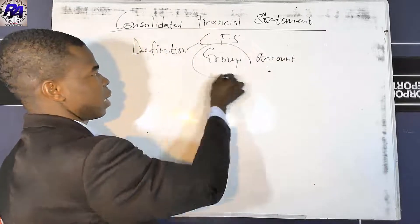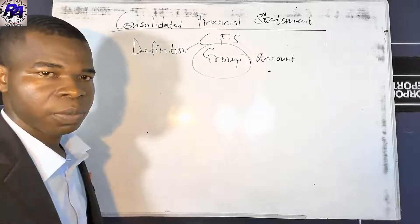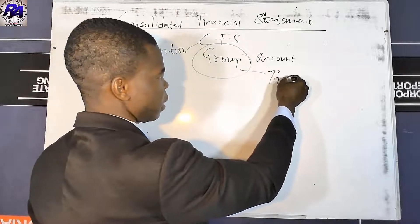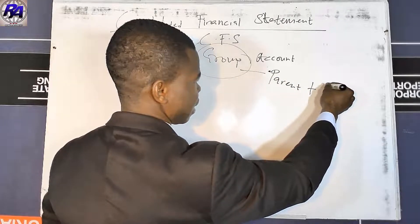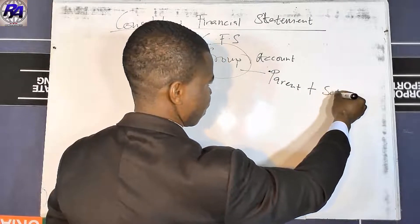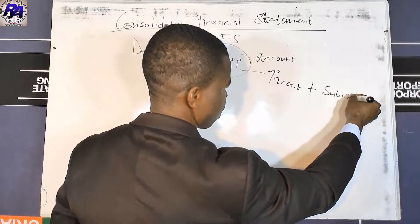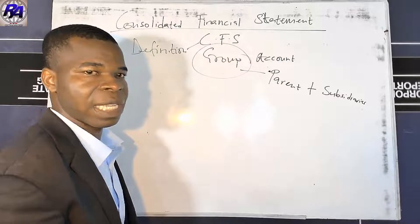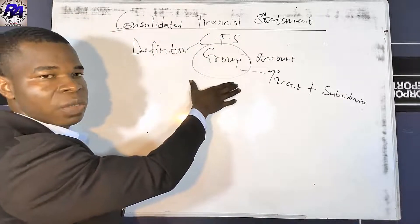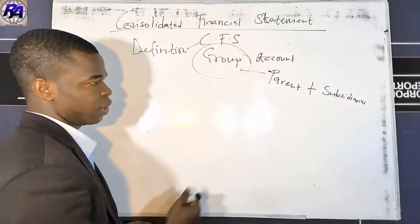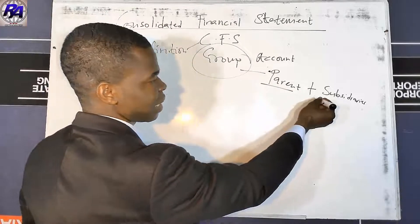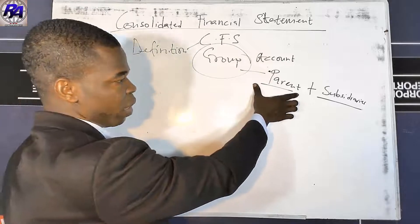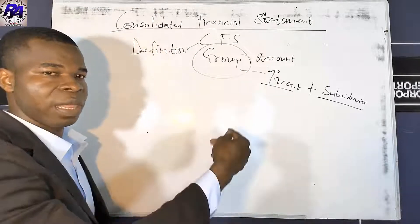An important concept is what constitutes a group. A group is a parent plus its subsidiaries. At any point in time, if one wants to determine a group, it will be a parent and one or more subsidiaries. The only way a parent can be more than one is when there is a joint arrangement — two entities coming together with joint control to acquire another entity.